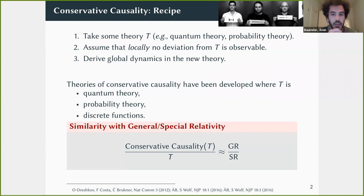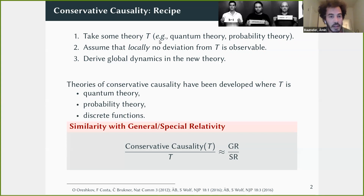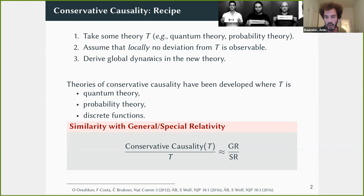The first such theory was developed by Ognyan Oreshkov, Fabio Costa, and Časlav Brukner — it's called the process matrix framework. Later, together with Stephan Wolf, we developed conservative causality for probability theory and discrete functions. The recipe is: take some theory T, for instance quantum theory, assume that locally no party observes any deviation from that theory, and from that derive the global dynamics.